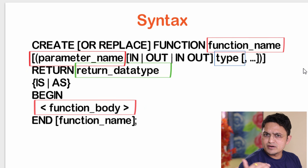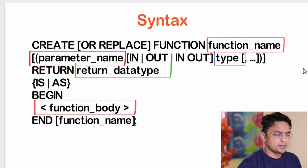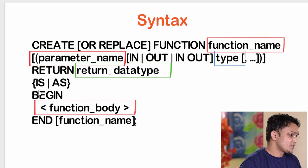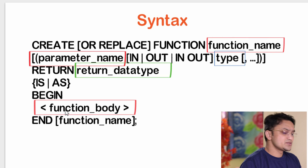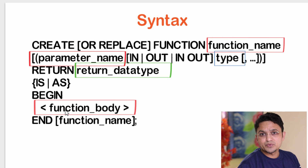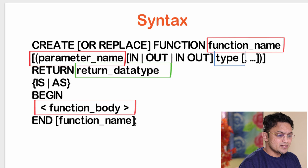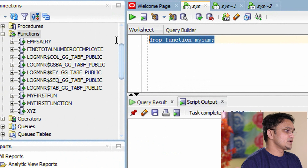A couple more differences between function and procedure will be discussed in upcoming videos. Moving on, the fourth line uses either IS or AS — you can use either one. After that, you can declare some variables, which we will see in our simple program. Then you write BEGIN and END — between these you write your logic, whatever logic you want. Now let's go to SQL Developer and write one simple program.